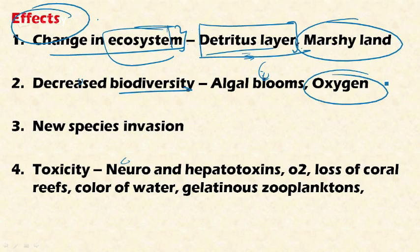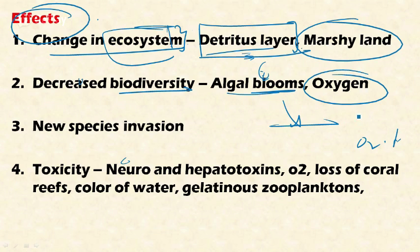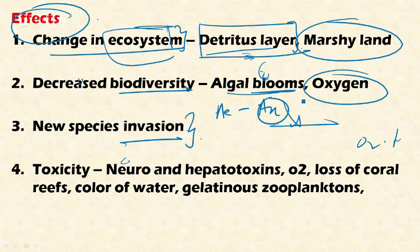The second major effect is a decrease in biodiversity. Due to reduced oxygen and reduced sunlight penetration caused by harmful algal blooms, plant and animal life in the water body diminishes. Third, new species invasion occurs: as the aerobic condition converts to anaerobic, a new class of species like Clostridium botulinum and other anaerobic organisms emerge in the ecosystem.